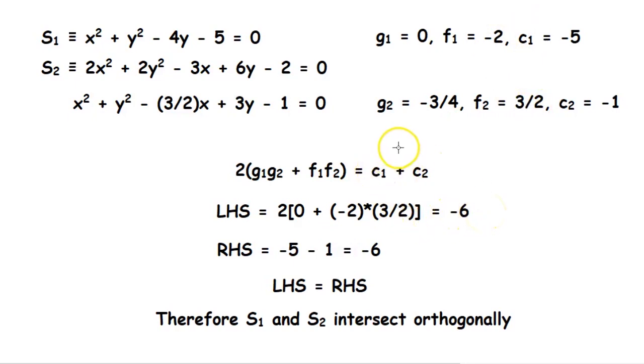Now let's take the right hand side of the equation. So that is equal to c₁ + c₂. Here c₁ equals -5 and c₂ equals -1, so that gives us -6. So here LHS is equal to RHS. So since the left hand side and the right hand side of this equation is equal, we can say that the two circles S1 and S2 intersect orthogonally.